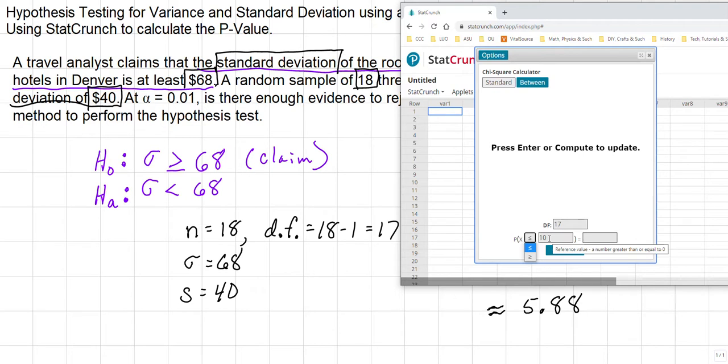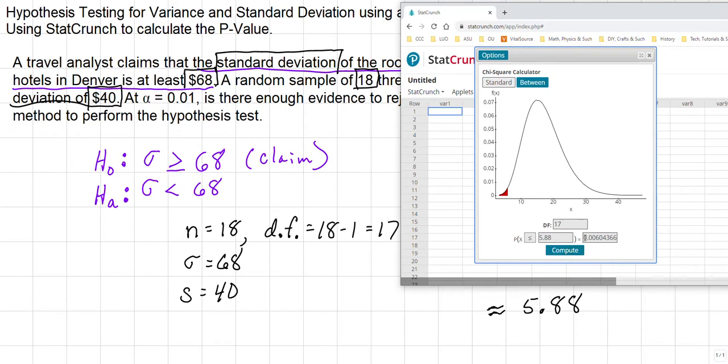And so what we're going to do is we will go ahead and we put our test statistic right here, which is 5.88, and then we compute. This right here is our p-value. You'll also notice right here, where the mouse cursor is, that we have a very small area to the left. So let's look at our p-value.